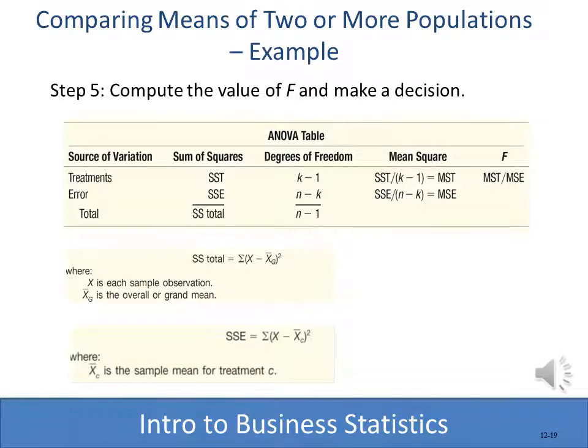What you're looking at is an ANOVA table, which shows the SST (source of variation for treatments), SSE (variation attributed to error), and SS Total. It shows how to compute the F as MST divided by MSE — mean square for treatment and mean square for error. If you're interested in computing this manually the book will walk you through it, but we're going to show you how to do it in Excel.